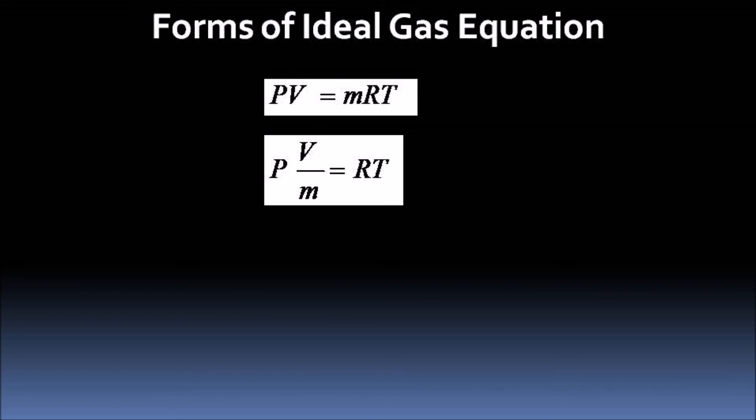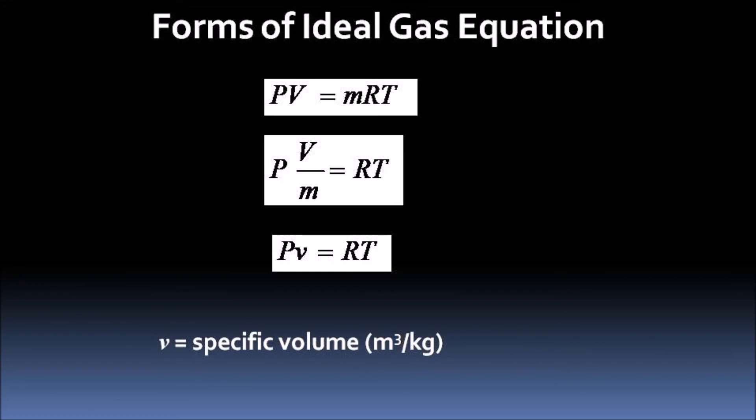V/m is called specific volume and denoted by small v. It shows the volume per unit mass of the gas. The final equation we get is Pv = RT.